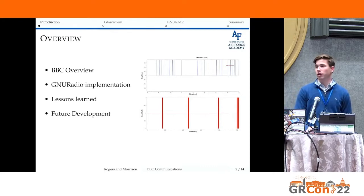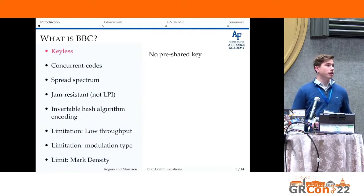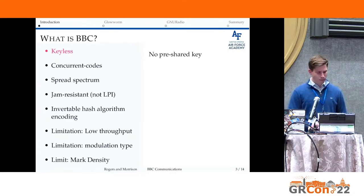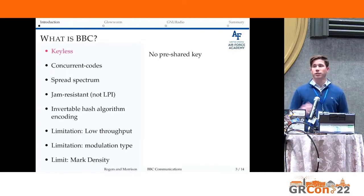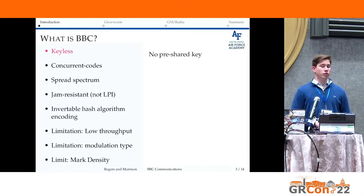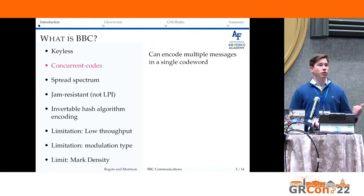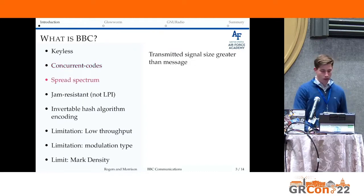So what is BBC? BBC is a codec, meaning it's a set of an encoder and a decoder. The encoder maps a message that you want to send to a code word that you actually transmit, and the decoder reverses that process. Note that throughout the presentation we may reference a mark — a mark is basically a bit with value one inside of the code word. BBC is unique in that it is a keyless method, so traditional spread spectrum jam-resistant technologies require the use of shared keys, for example frequency hopping or direct sequence — BBC doesn't. BBC also leverages concurrent codes theory, meaning you can encode multiple messages into a single code word and on the decoder side recover all of your messages.